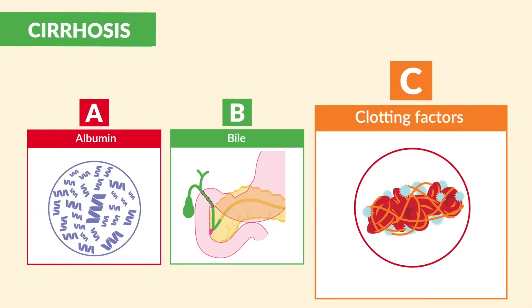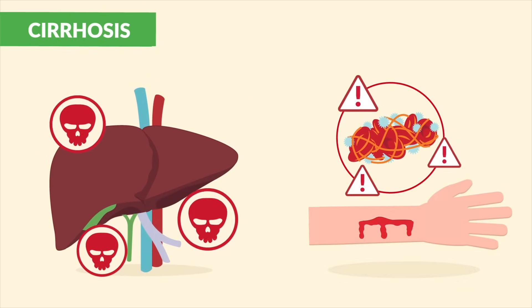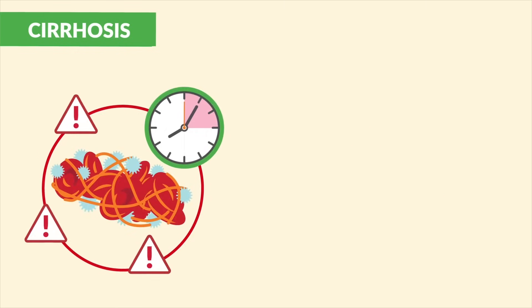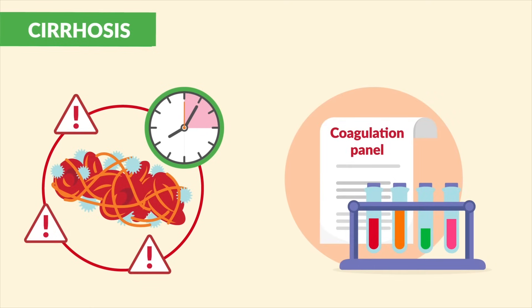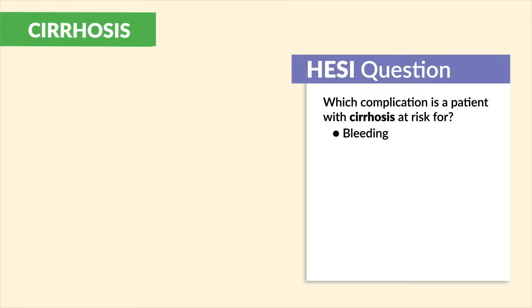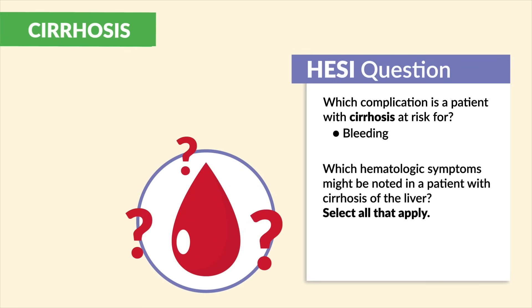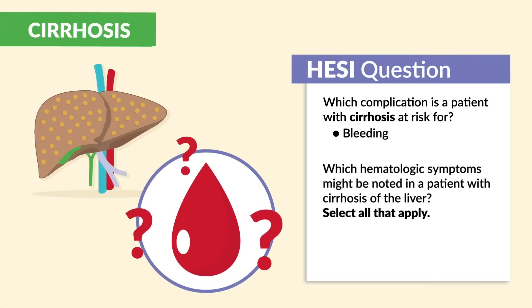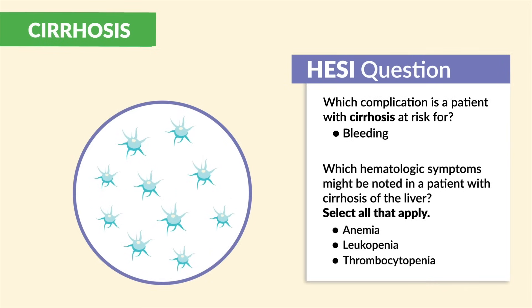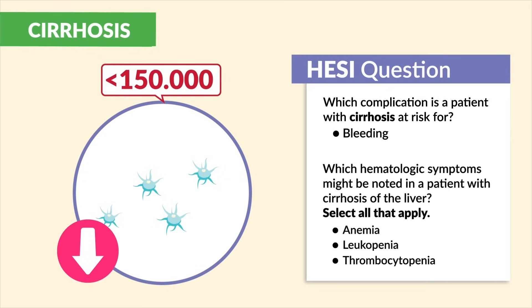C is for clotting factors (coagulation factors), which help the blood to clot. With liver disease, blood doesn't clot fast enough, leading to a huge bleed risk — bleeding is always the number one concern. We see longer coagulation times on the coagulation panel. Hesi mentions complications including bleeding, and hematological findings include anemia, leukopenia (low white blood cells), and thrombocytopenia (low platelets, under 150,000). Focus on thrombocytopenia for now; anemia and leukopenia will be covered under portal hypertension.